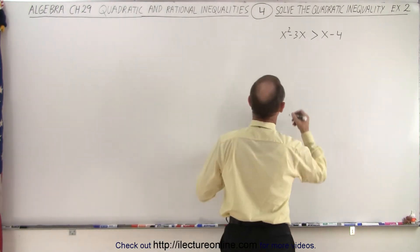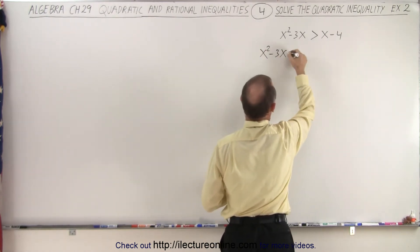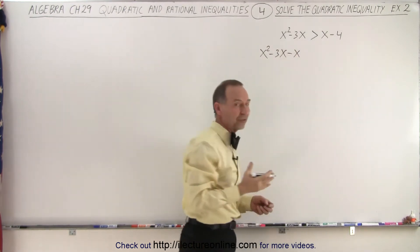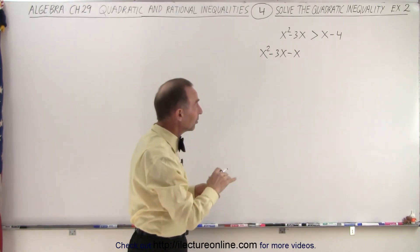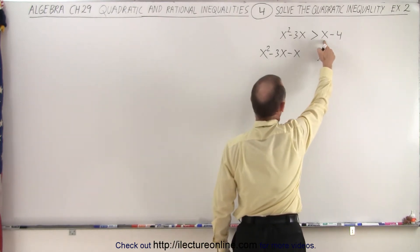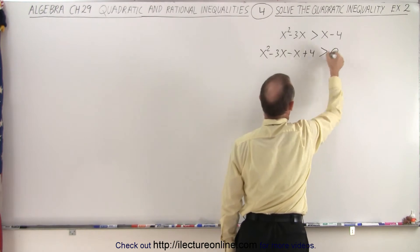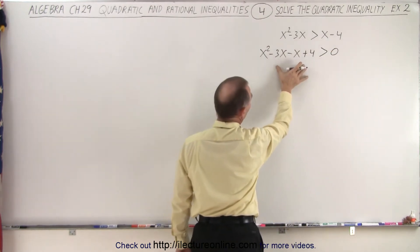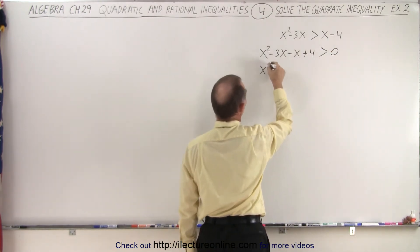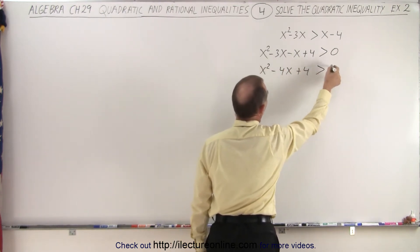So let's do that to end up with x squared minus 3x. The positive x becomes the negative x, just like with an equal sign. Whenever we cross that inequality symbol, the sign of the numbers or the characters change. So this becomes a negative x, and that becomes a positive 4 greater than zero. Now we simply have to simplify what we have here. So x squared minus 4x plus 4 greater than zero.